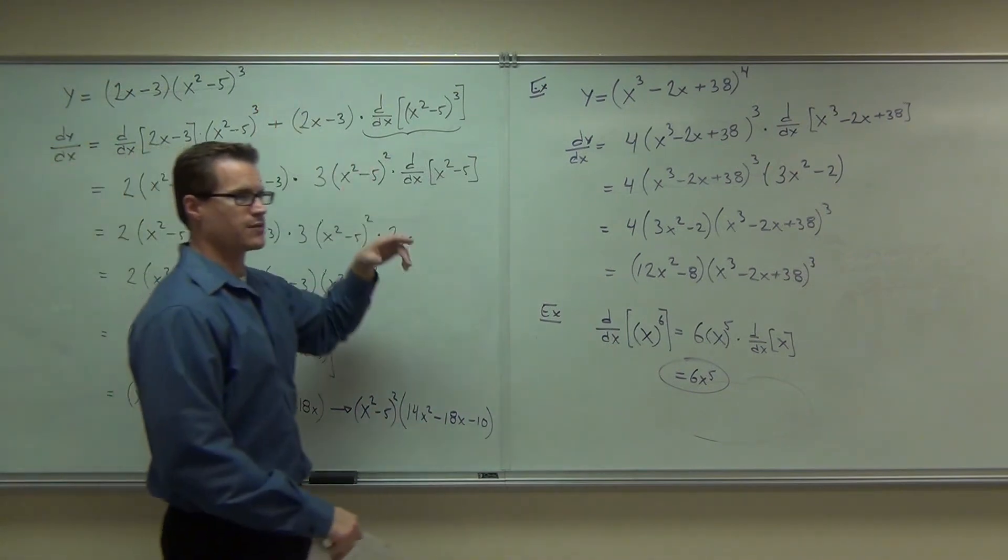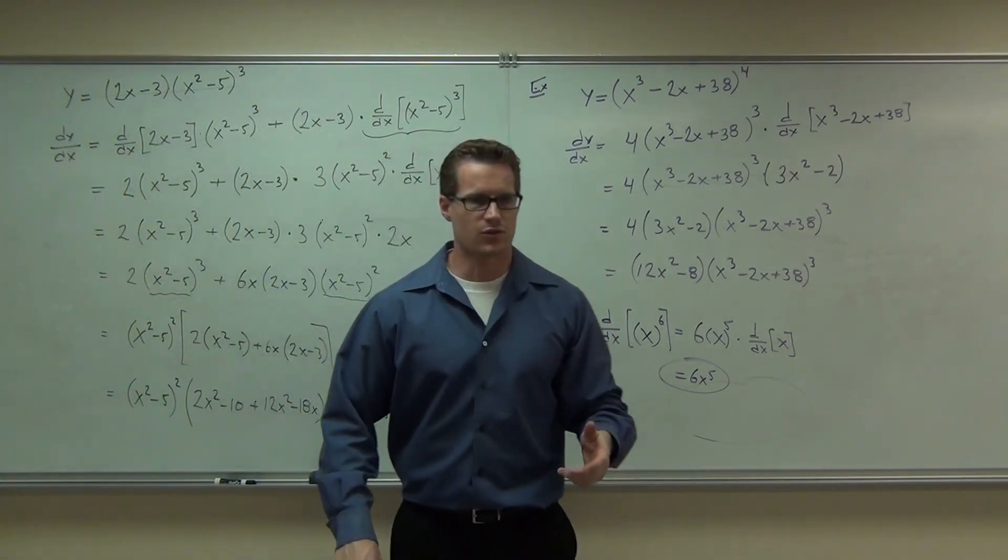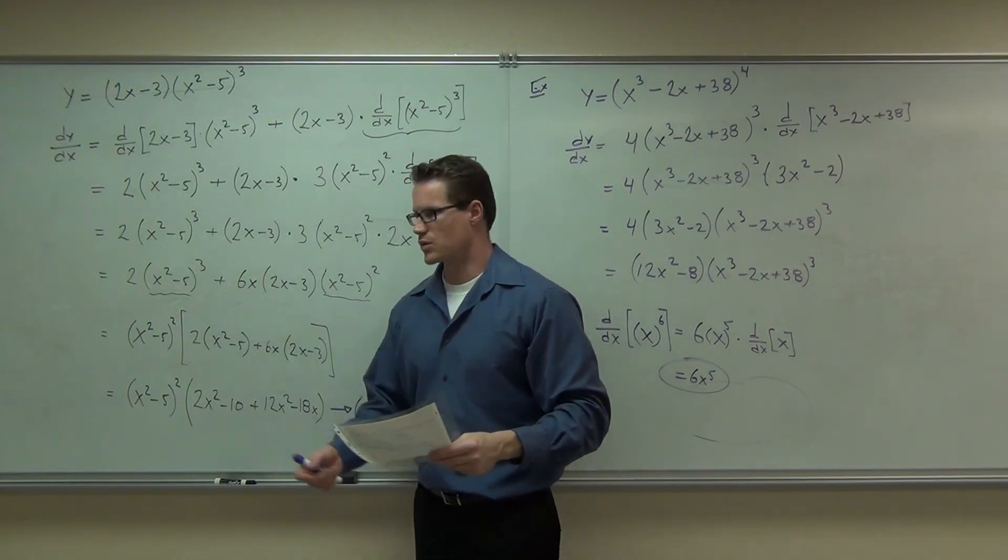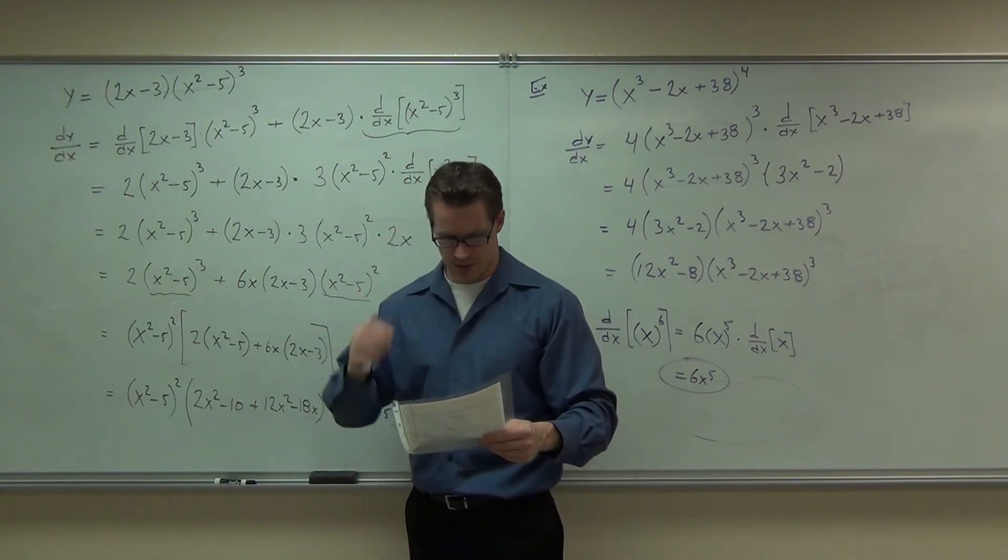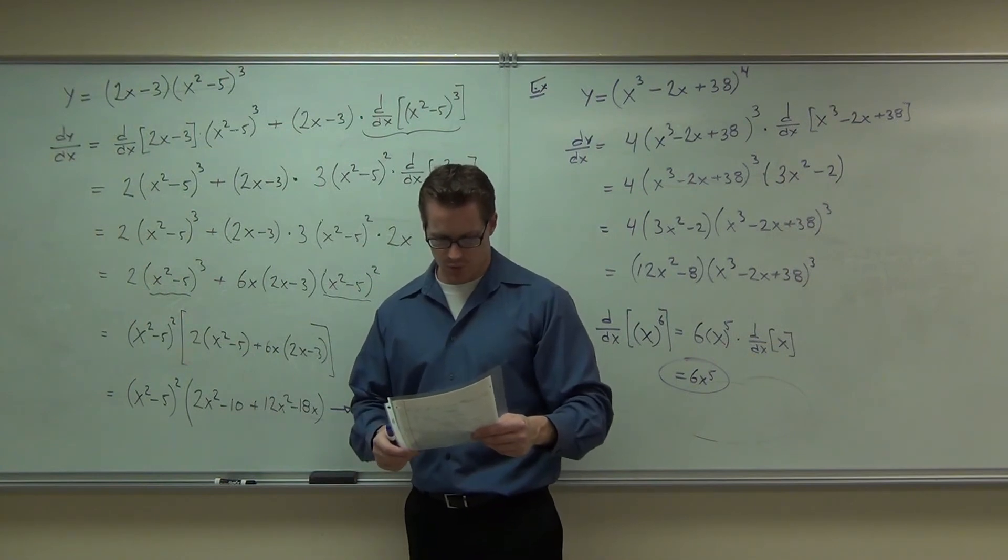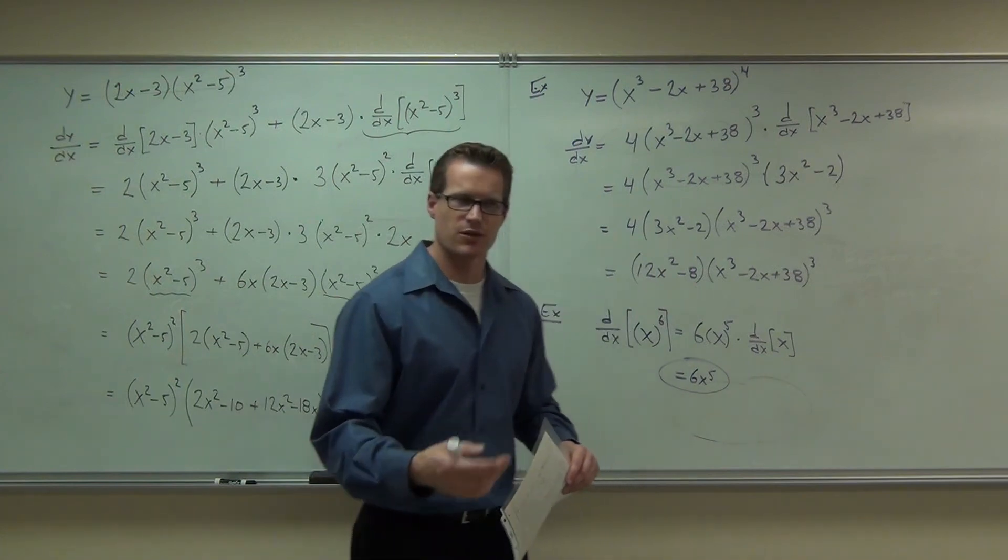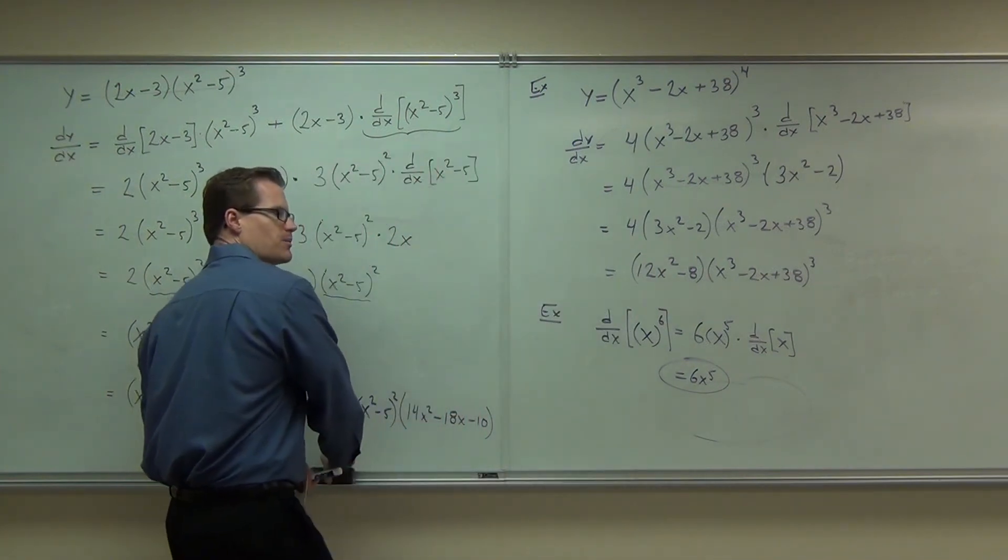Or if this is a position curve, we're finding velocity or a rate of change. Or if it's a cost function, we're finding marginal cost, marginal profit, things like that. Very interesting stuff. Let's try a few more. I need to show you how the chain rule is going to affect something to do with like a trig function. And that will probably be about our day.